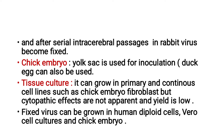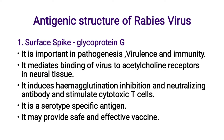It can grow in primary and continuous cell lines such as chick embryo fibroblastic cells. Cytopathic effects are not apparent and yield is low. Fixed virus can be grown in human diploid cells, Vero cell cultures, and chick embryo cell cultures.